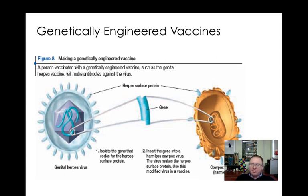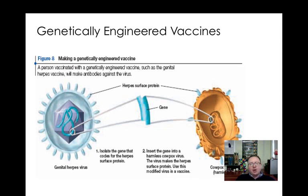Genetically engineered vaccines are one way scientists have found to get around the problem of the vaccination itself causing disease. With a genetically engineered vaccine, the surface protein gene from the pathogen we want to vaccinate against is moved into a harmless vector. Because that vector is normally harmless to us, our immune system identifies it as not a threat, and therefore antibodies can be produced against the surface protein — but it's not going to cause disease.